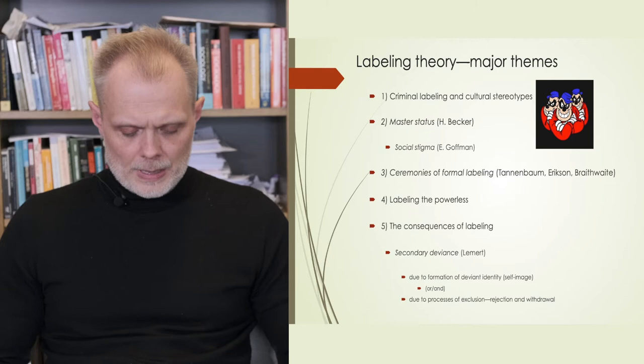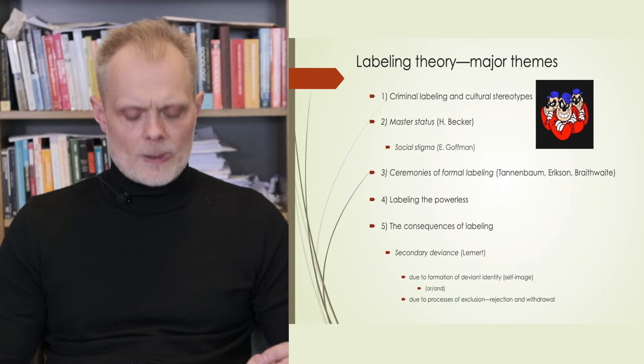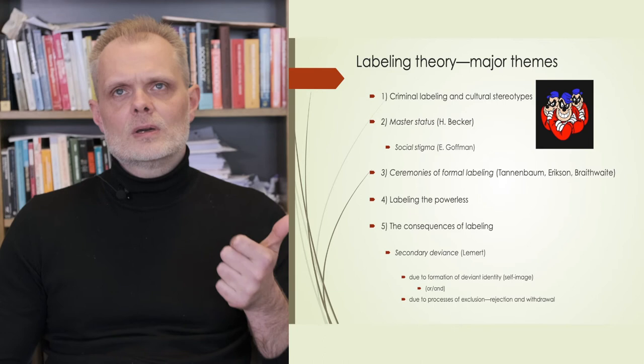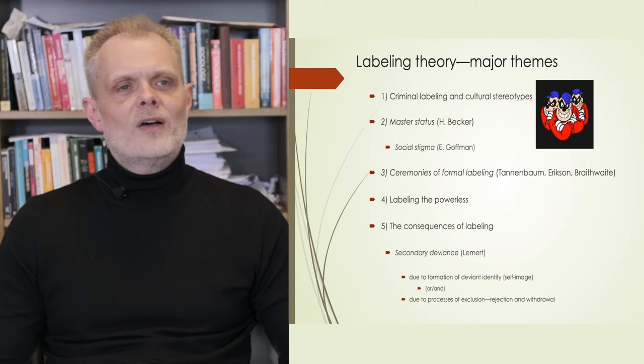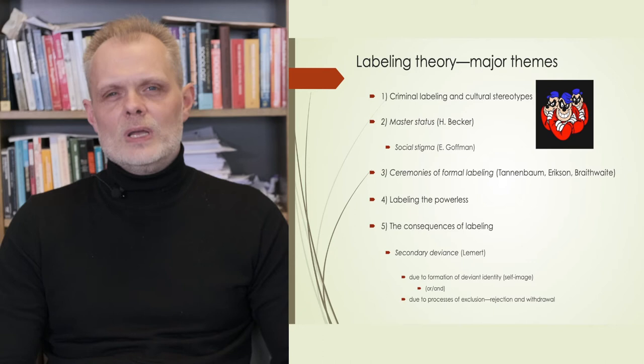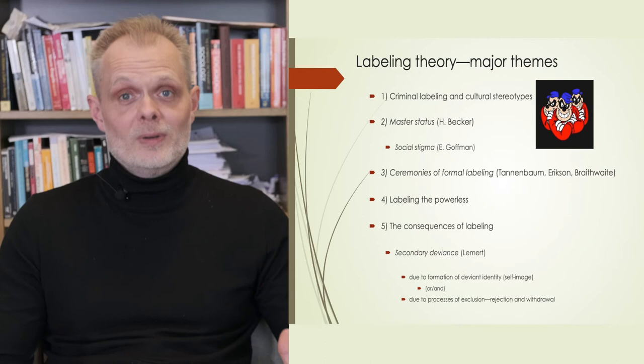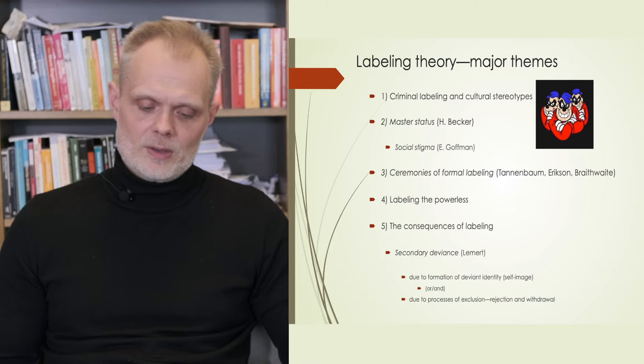Third, the third theme of labeling theory is that criminal justice is a major source of criminal labeling. Arrest, conviction, trial, these are ceremonies of labeling. Theorists often argue that once you have gone through these ceremonies of formal labeling, it is very difficult to get rid of the label. We have ceremonies to label people as criminals, but no ceremonies to de-label individuals, which is why the criminal label tends to stick.